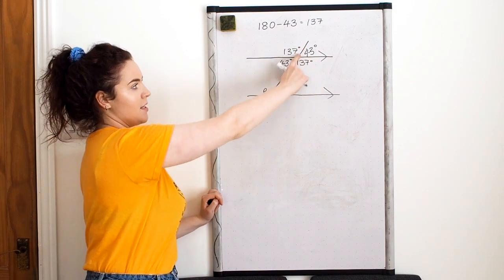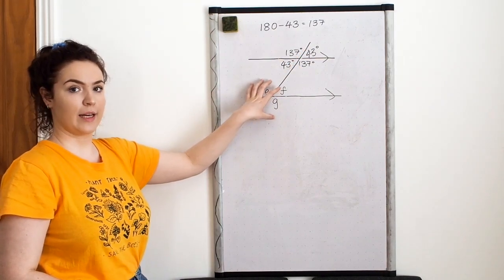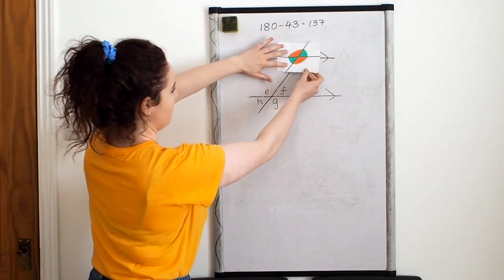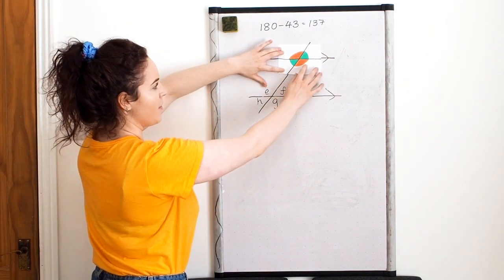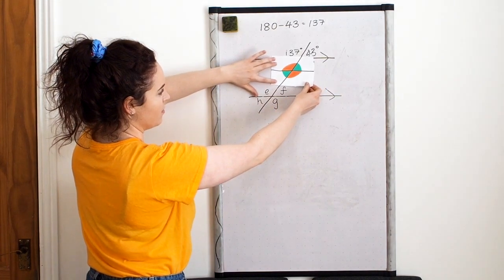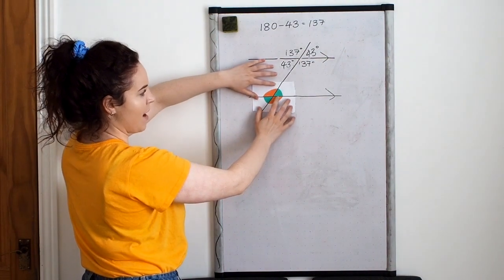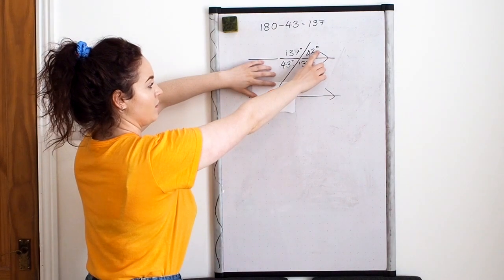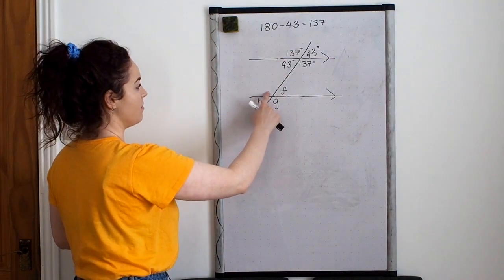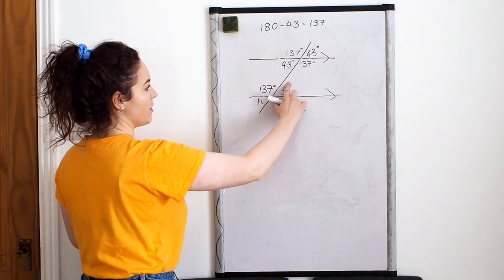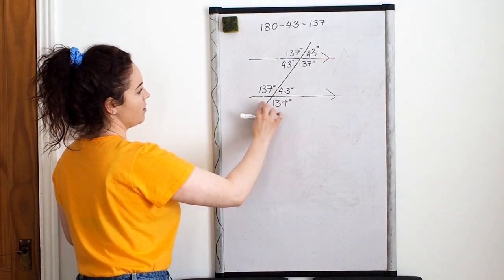Now I'm looking for the relationship between the angles at the top intersection and the angles at the bottom. I've drawn these lines on a piece of paper, and you can see that if I slide this piece of paper down the transversal, because the two lines are parallel, they are going to directly match up at the bottom. So all of the angles at the top are exactly the same as the angles at the bottom — E is 137, F is 43, G is 137, and H is 43.